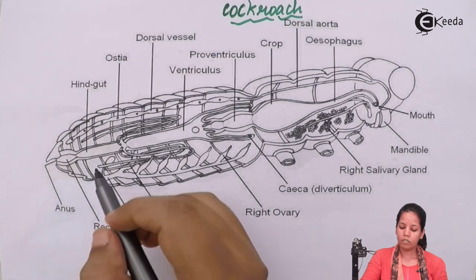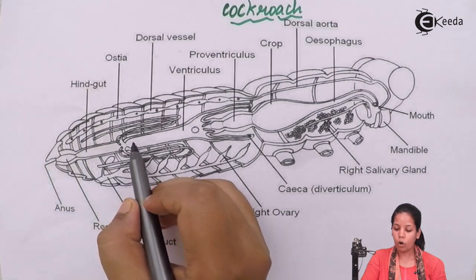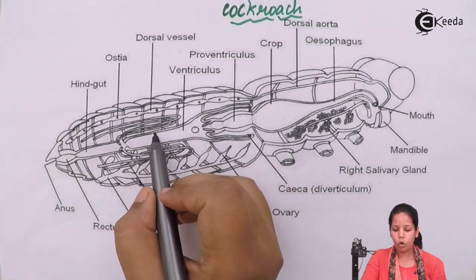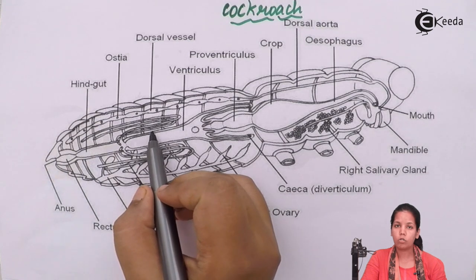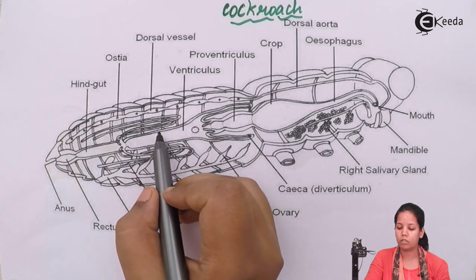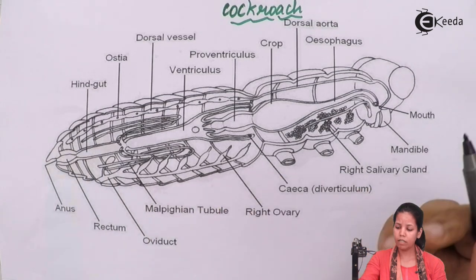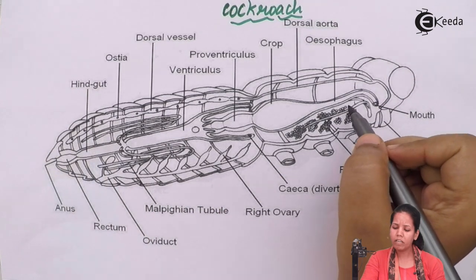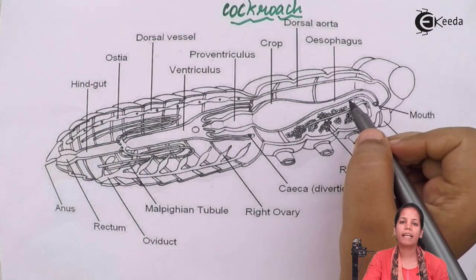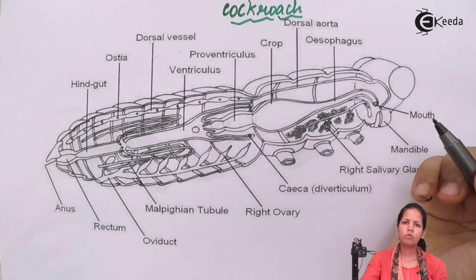The hindgut also plays a very crucial role, and especially the dorsal vessels, which are closely associated with the circulatory system of the cockroach. The esophagus in the cockroach is very similar to that in humans — it is the food pipe that helps to pass food along.